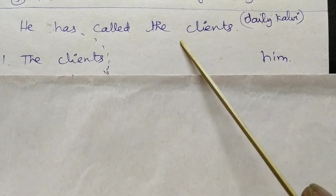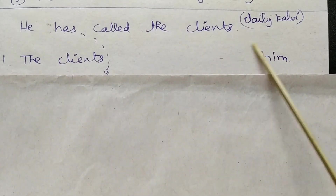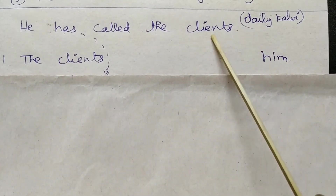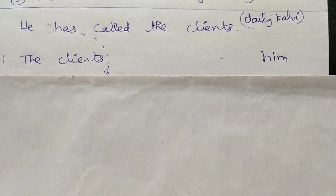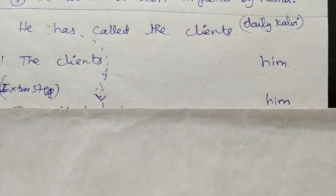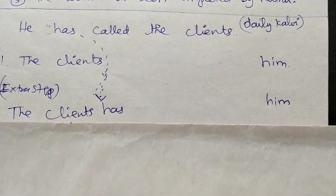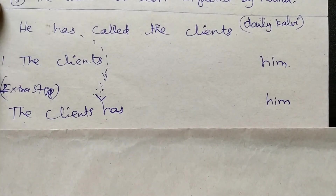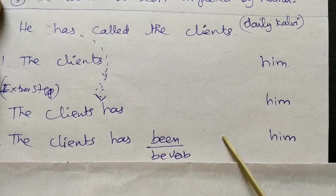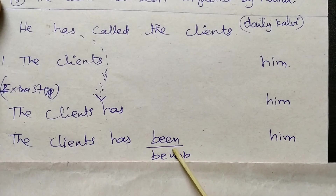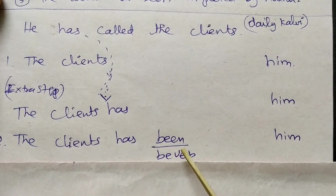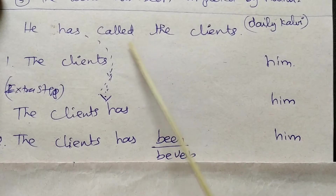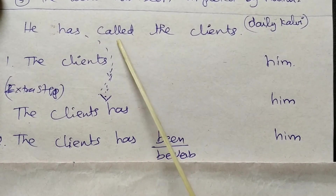First step: swap subject and object. The object 'clients' becomes the new subject. There is an extra step - 'has' is placed here. Second step: add the be-verb as usual. 'He has called' - 'called' is V3.